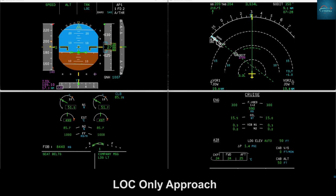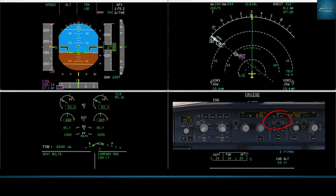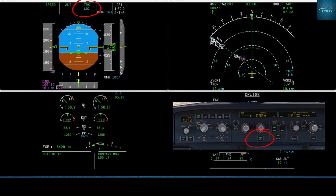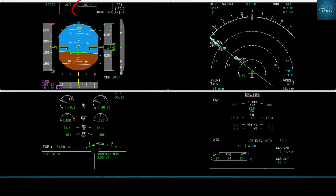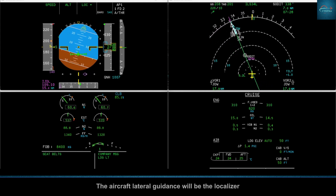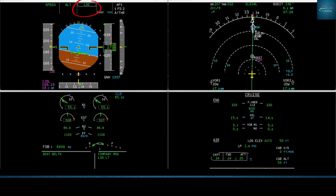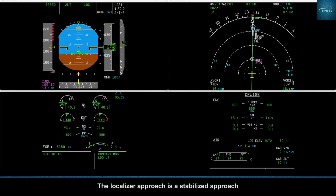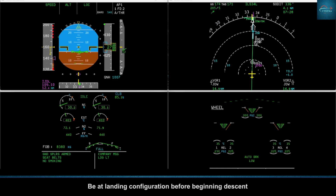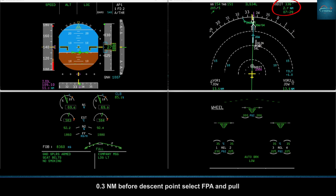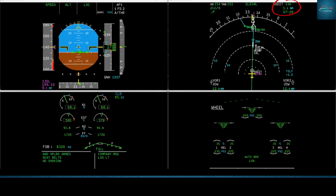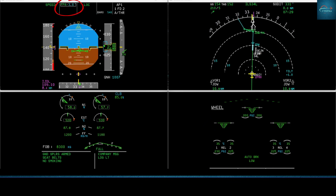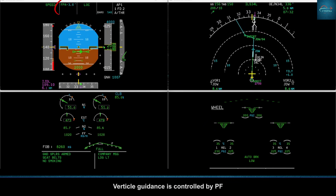Localizer-only approach. Select track and flight path angle. Select the ILS pushbutton on. On the localizer, the aircraft lateral guidance will be the localizer. The localizer approach is a stabilized approach — be at landing configuration before beginning descent. 0.3 nautical miles before the descent point, select flight path angle and pole.